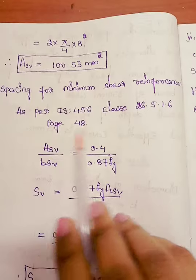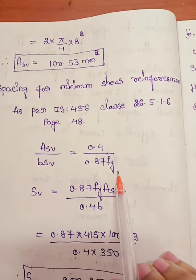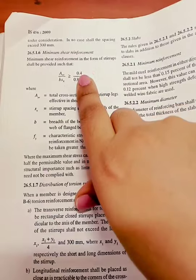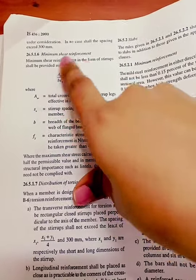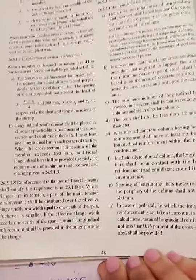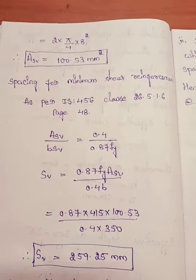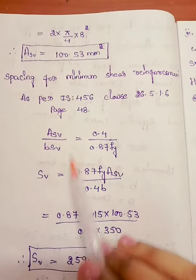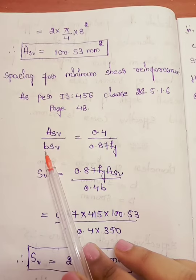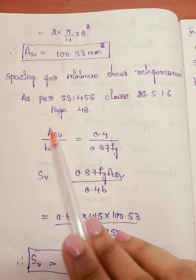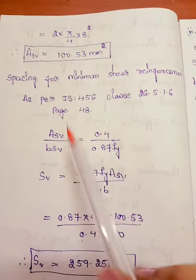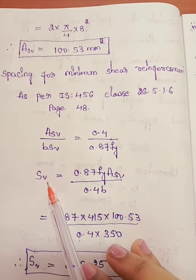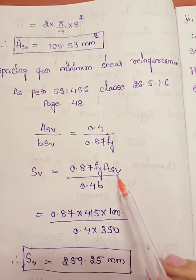As per IS 456, clause 26.5.1.6, page 48, the formula for minimum shear reinforcement is: Asv / (b × sv) = 0.4 / (0.87 × fy). We know fy, we know b, and we have already calculated Asv in the previous step, so the only unknown is sv, which we need to find.